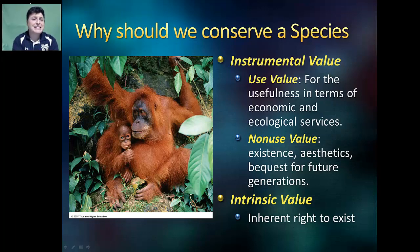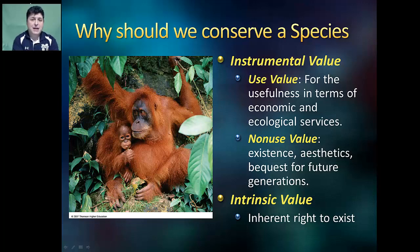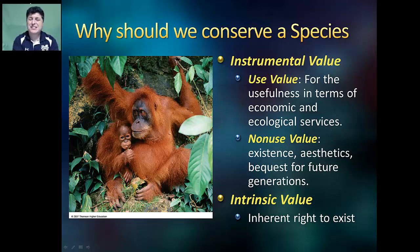Its non-use value includes its existence value, aesthetic value, and bequest value. An existence value is just the joy that a person gets from knowing that an organism exists in the wild. Its aesthetic value is the joy we get from observing that organism in the wild, and its bequest value is the joy we have knowing it will be present for future generations. The intrinsic value of an organism is simply its inherent right to exist.